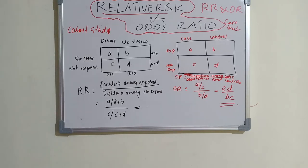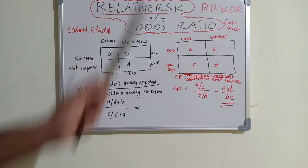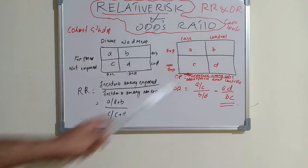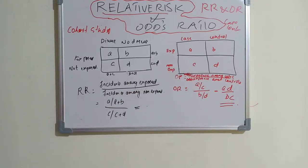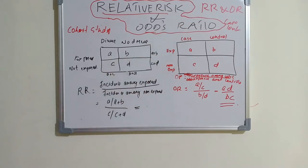In a cohort study, there is no disease at the beginning, and as time progresses, people with disease start appearing — so it is easy to understand actual risk. In a case-control study, we go backward; it is a retrospective, backward-looking study. When it starts, cases are already present, and we compare them with controls. So odds ratio is an indirect measure of risk estimation, not a direct measure.